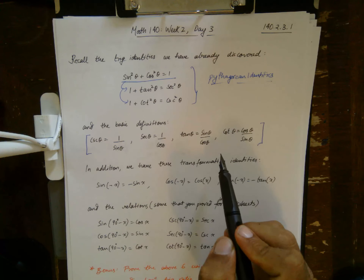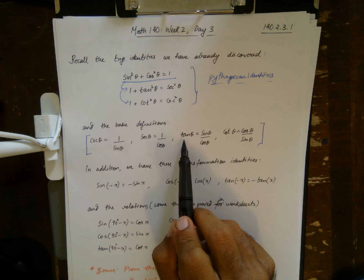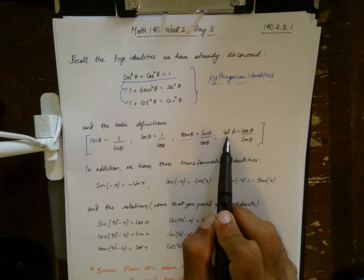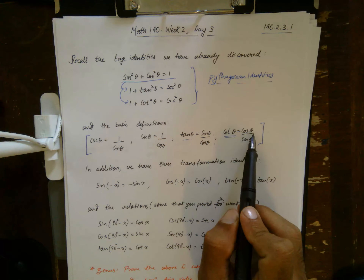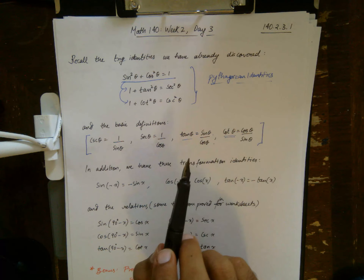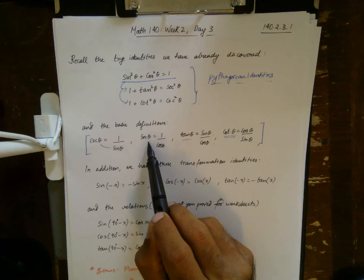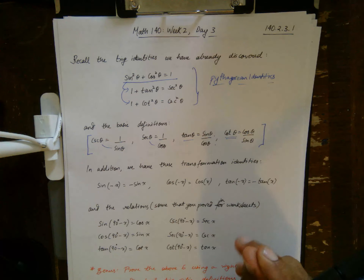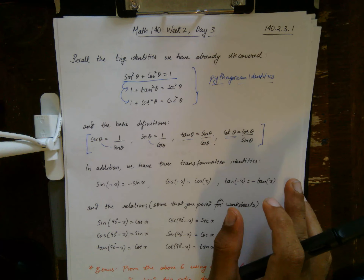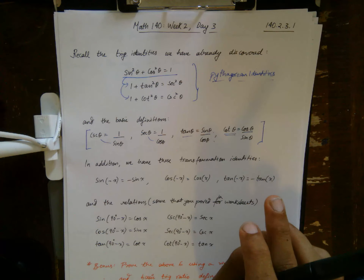We also have the basic definitions of these trig ratios: tangent as a ratio of sine to cosine, cotangent as a ratio of cosine to sine, and secant and cosecant having the inverse relationship with cosine and sine respectively — and by inverse I mean algebraic inverse, not functional inverse.